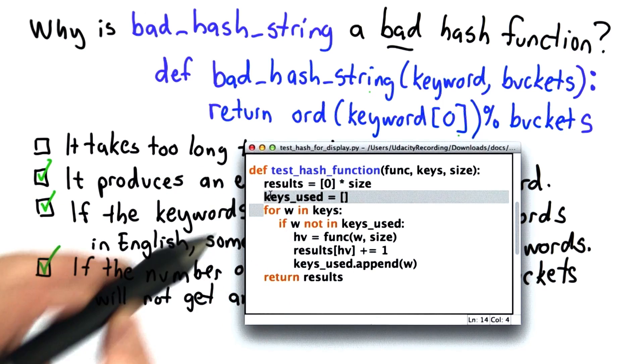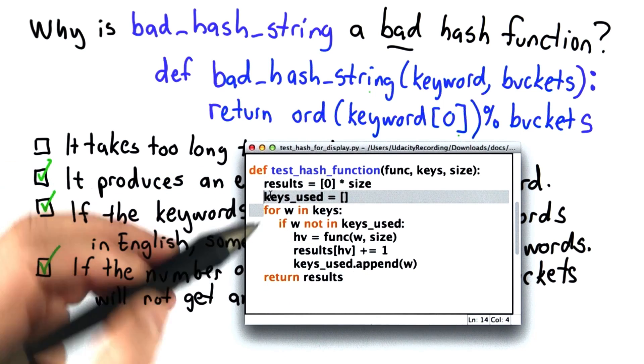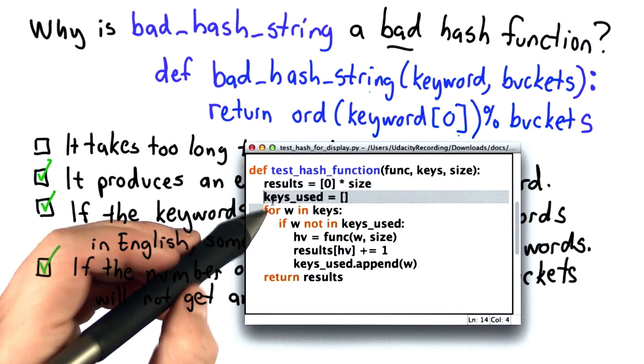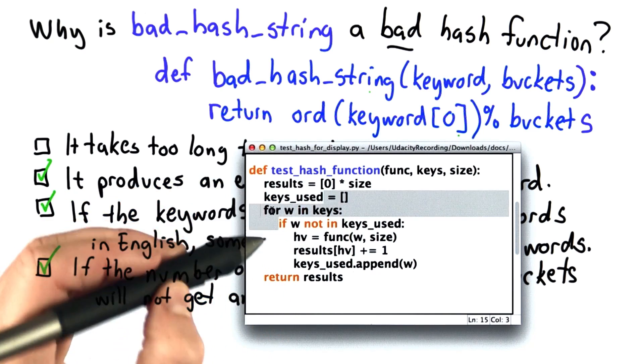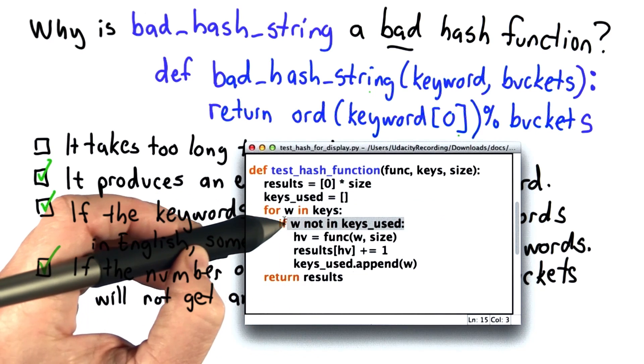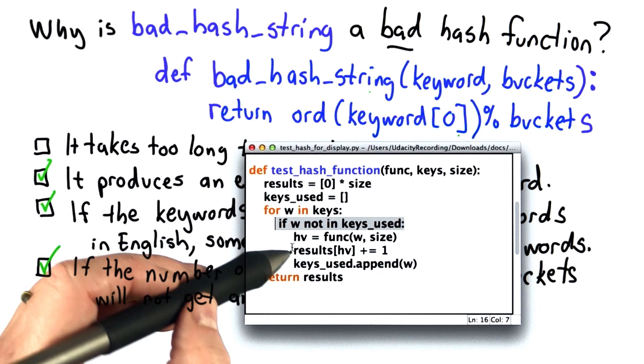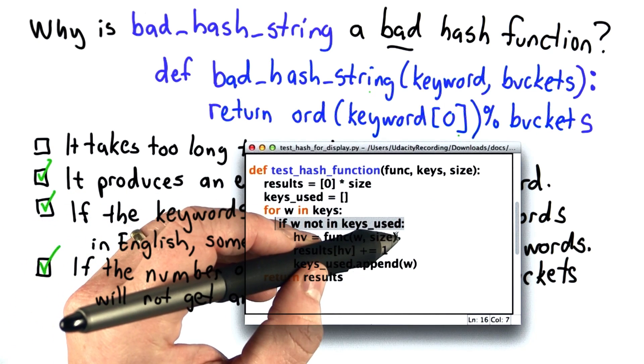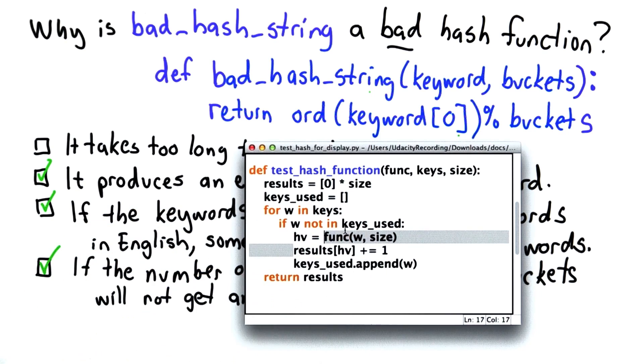We're going to use keys_used as a list of the keys that have already been used. We don't want to count a duplicate key more than once. So now we're going to loop through the keys. We're going to check if the key was used already. And if the key was not used, then we're going to figure out by calling the hash function where that key would hash to.